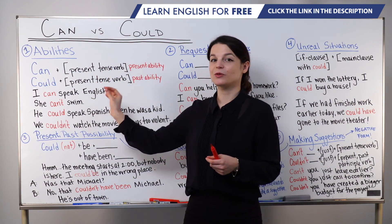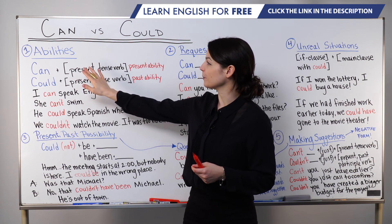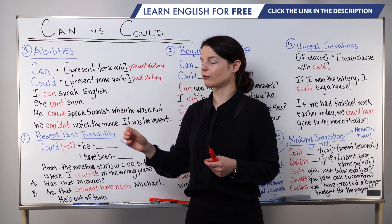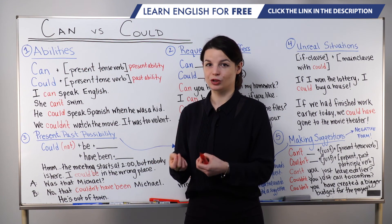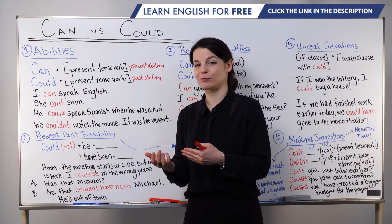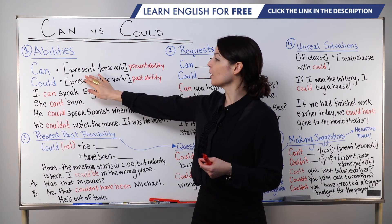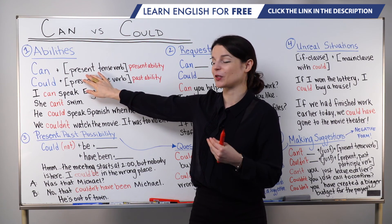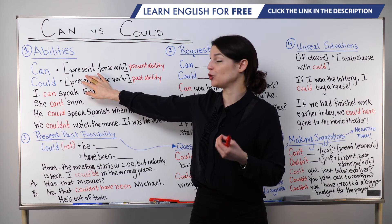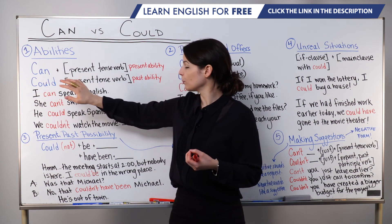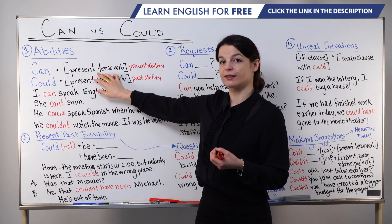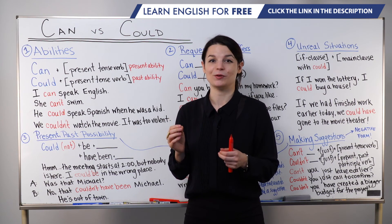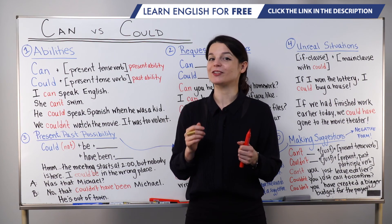The first way to use can and could that I want to talk about is to express abilities — something we are able to do or not able to do. When we want to talk about a present ability, something we can do now, we use can plus a present tense verb. This expresses a present ability, something we can do now. It's possible for us to do that now.